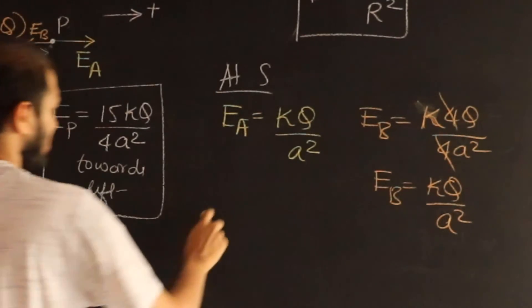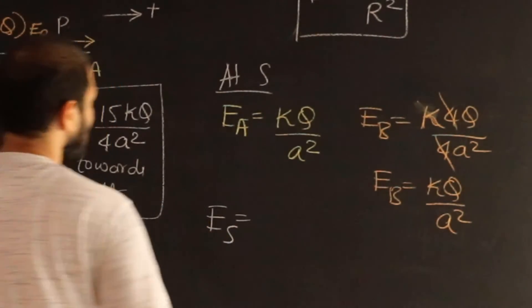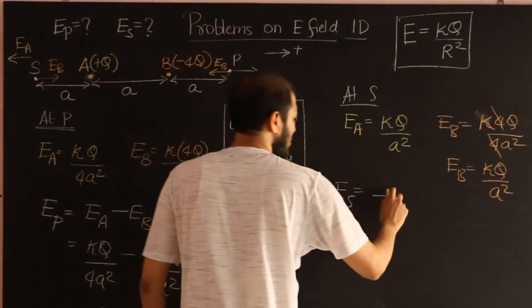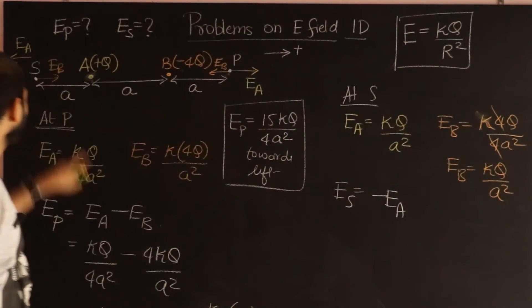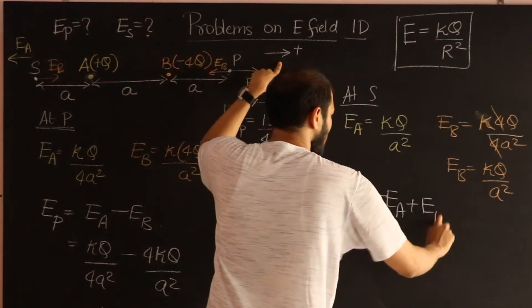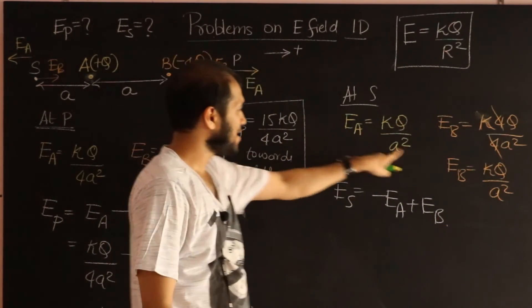So the total field now, at S, let's use sign conventions, E_A is negative, so I put a minus E_A, and E_B is positive, according to my sign convention, plus E_B. But notice, they have the same magnitudes.